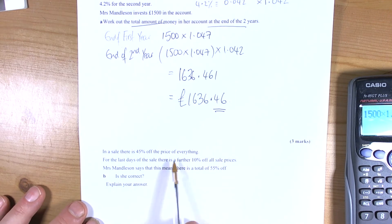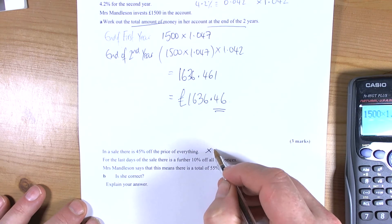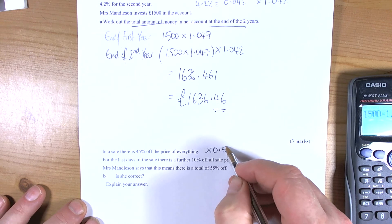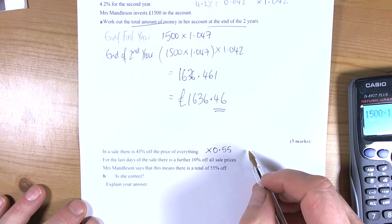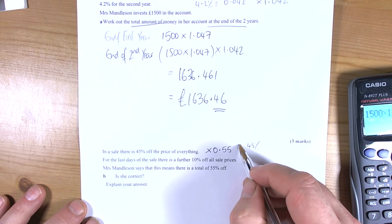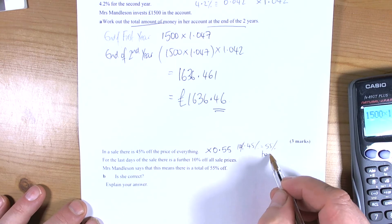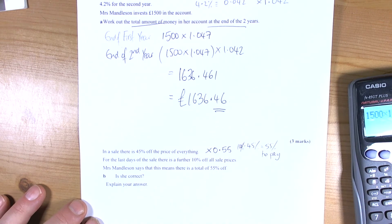We've got a question here that's asking us to think about sales. So in a sale there's 45% off the price of everything. So that's the same as multiplying by 0.55. So we need to remember that if you get 45% off, then it's like doing the 100% that you originally had take away the 45% and you've got 55% to pay. And to work out 55% of anything then we times by 0.55.